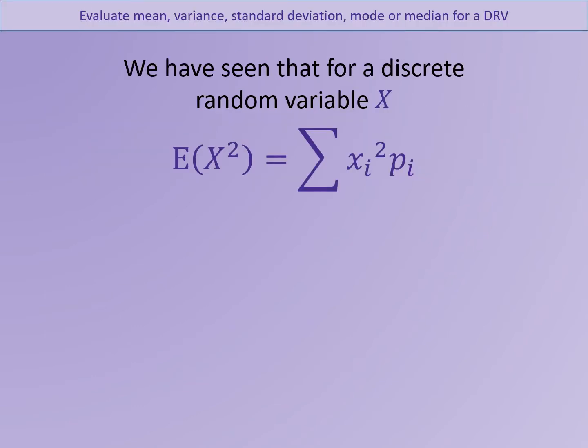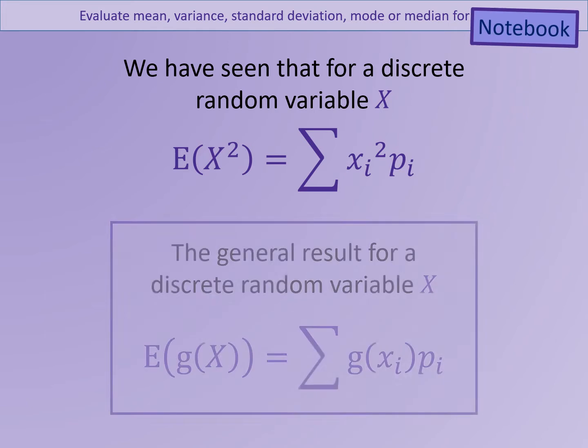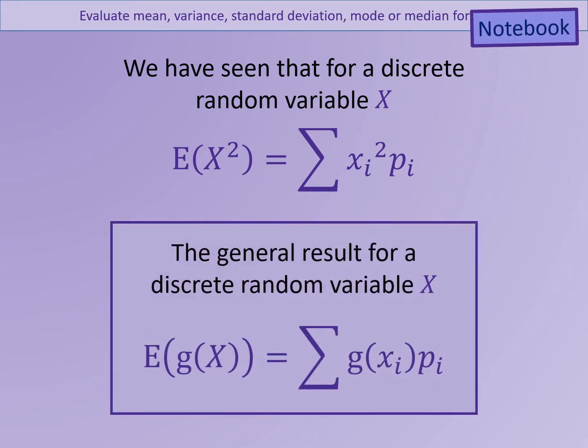We've seen previously that if we wanted to find the expected value of X squared for a discrete random variable X, we could do this by calculating X squared multiplied by the probability of that X value occurring and then adding up each of the values for every X. We can extend this to find the expected value of any function of X by multiplying the values of the function of X by its probability and then adding up all of these values.